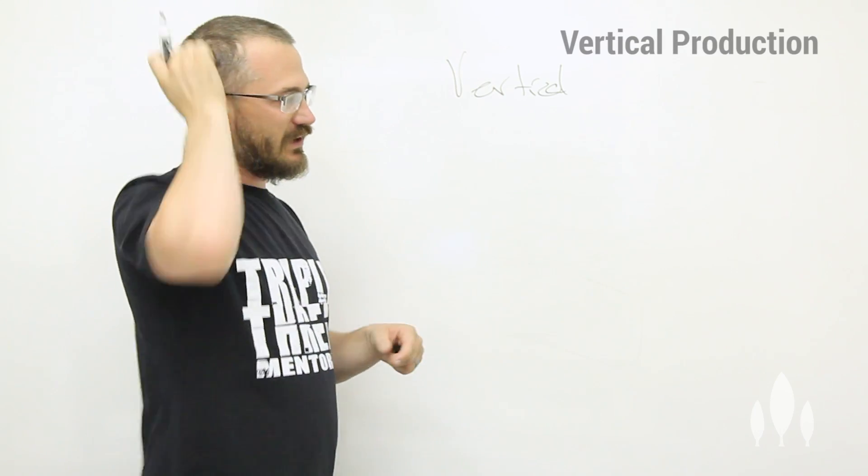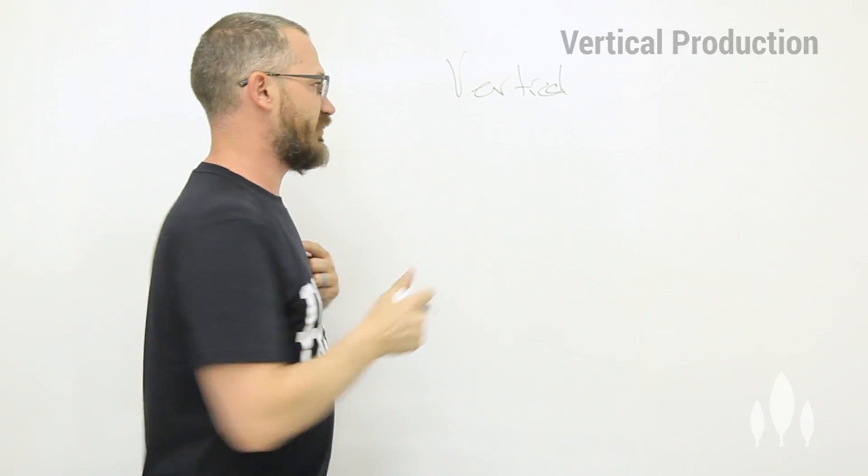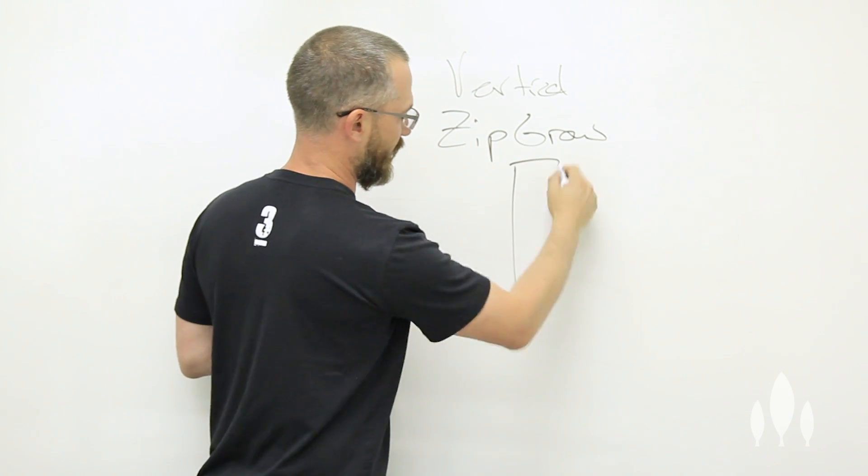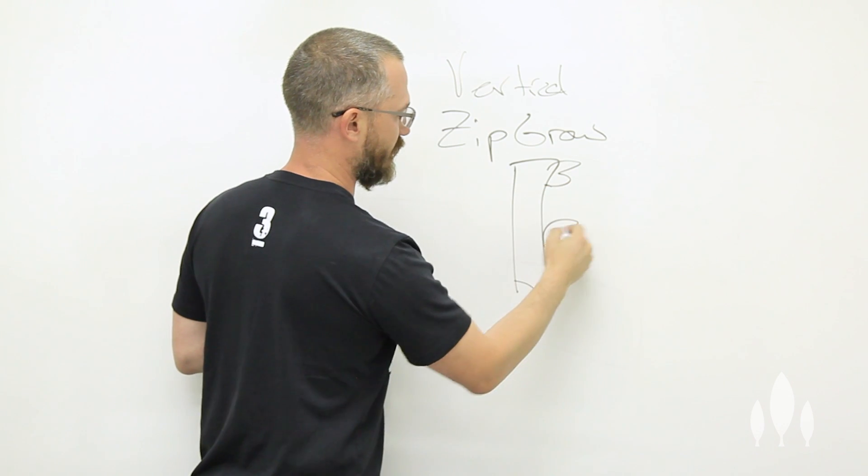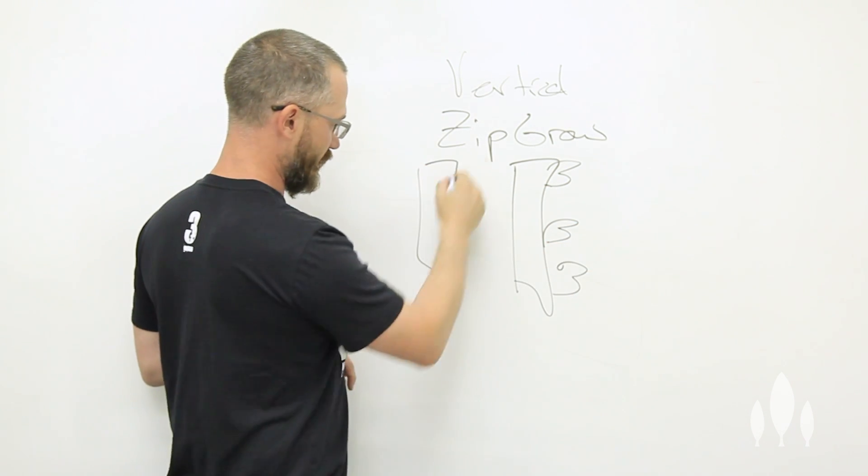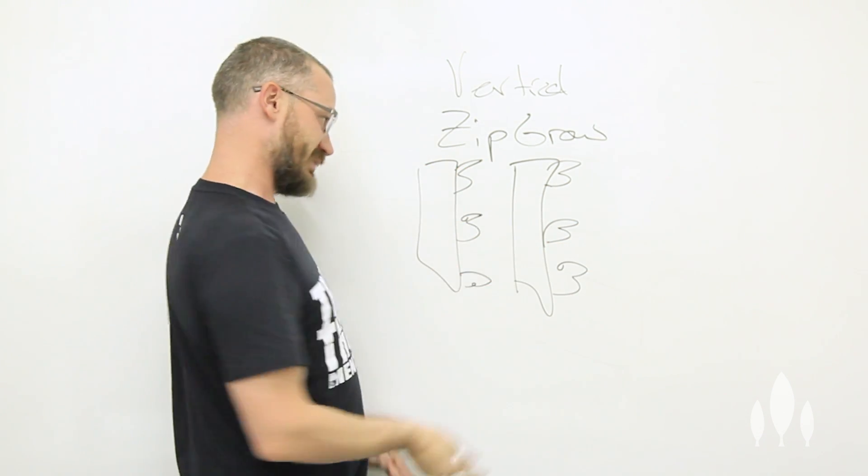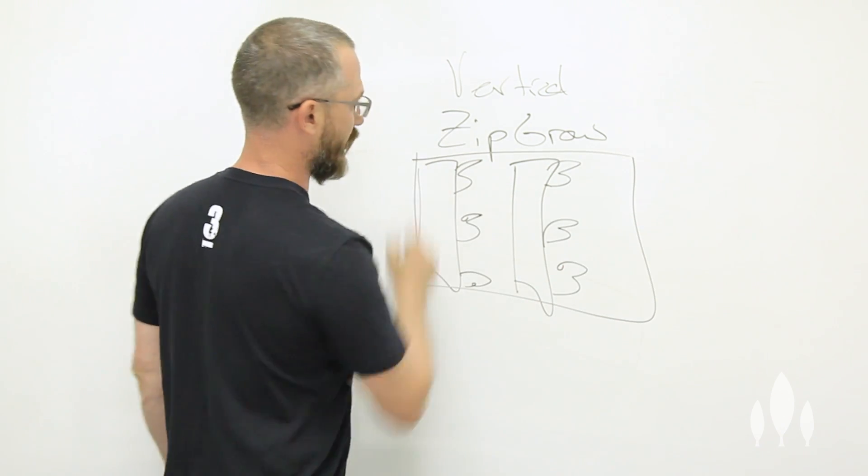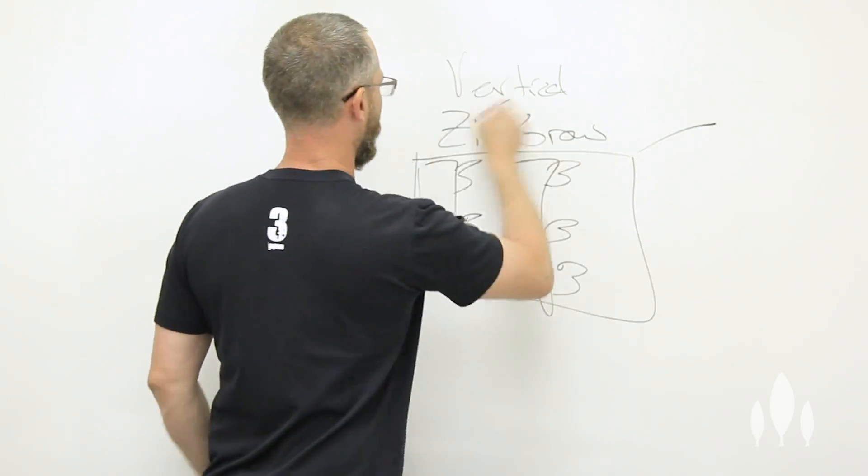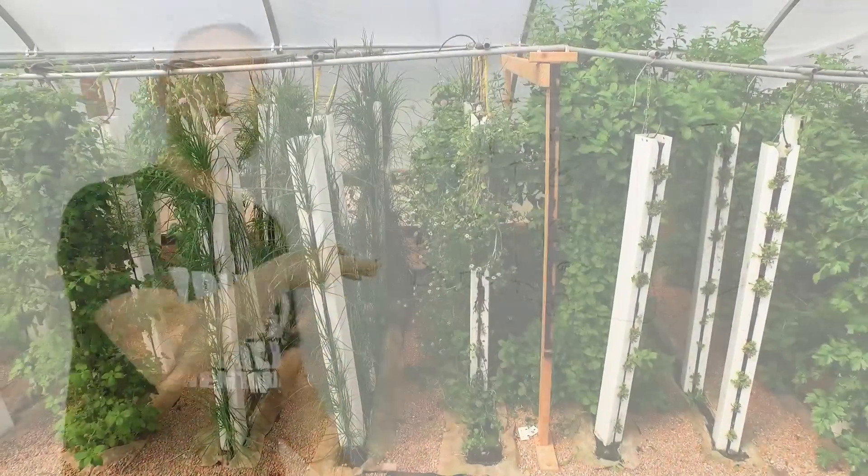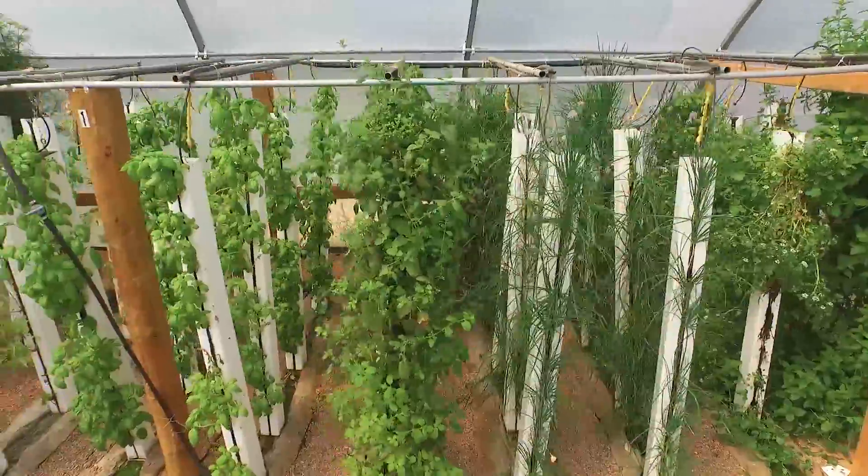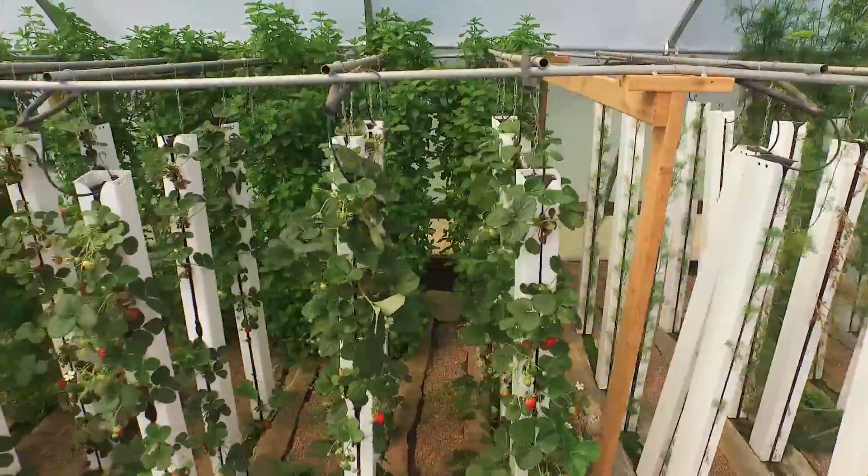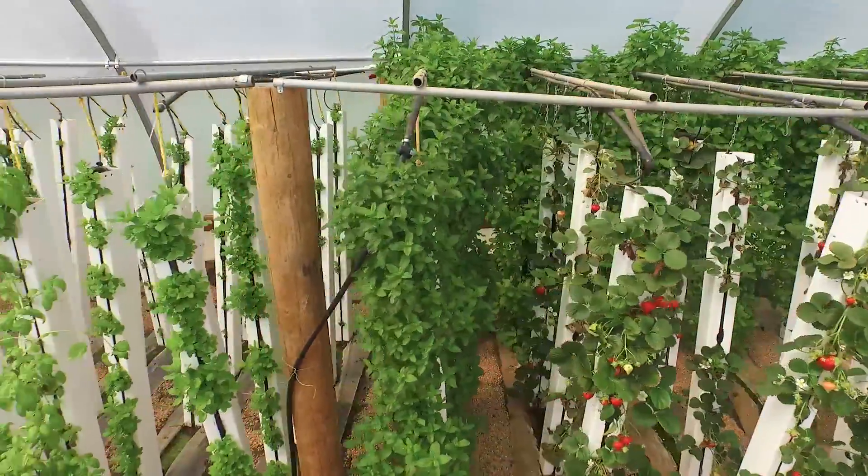So vertical production techniques, the one that we use the most is of course ZipGro. And this is anything that is basically a tower system where we're growing plants in three-dimensional space. And it could be multiples of these towers. We use the ZipGro which is a single-face tower. And basically what we're doing is we're thinking about our growing environment in terms of three-dimensional space as opposed to the traditional single-plane production techniques. So vertical is becoming a more and more important growing technique, especially for indoor growers who want to maximize their space use efficiency.